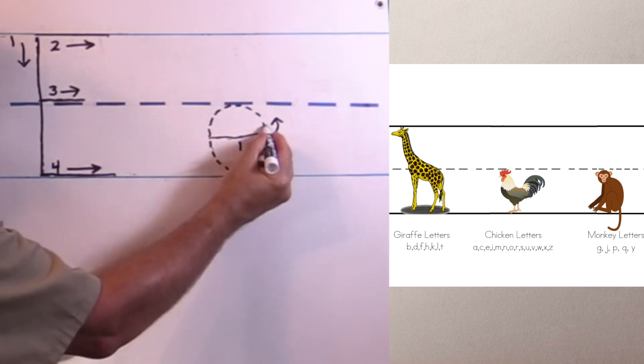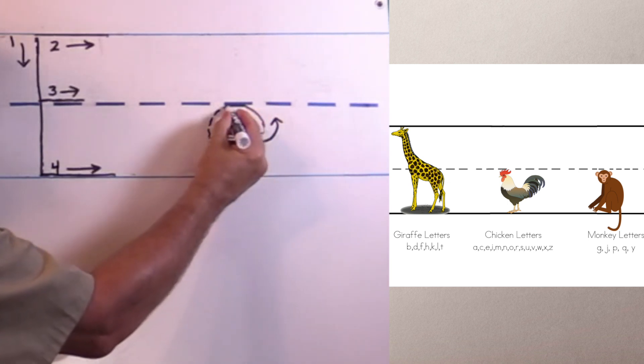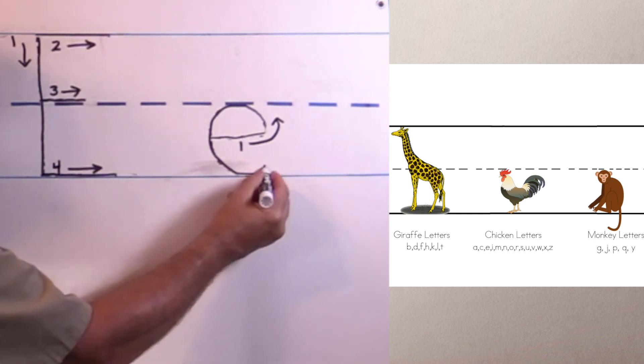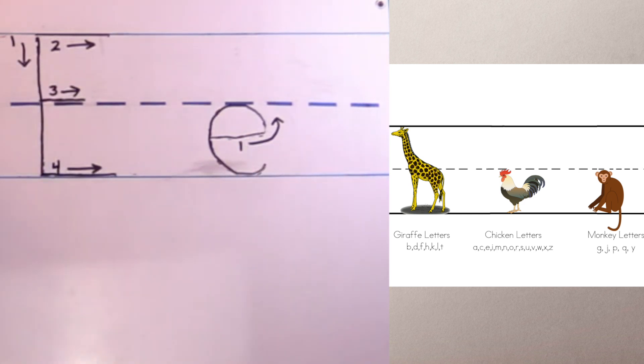When I get here, I go up and around and back down and curl it in. And there is my lowercase E.